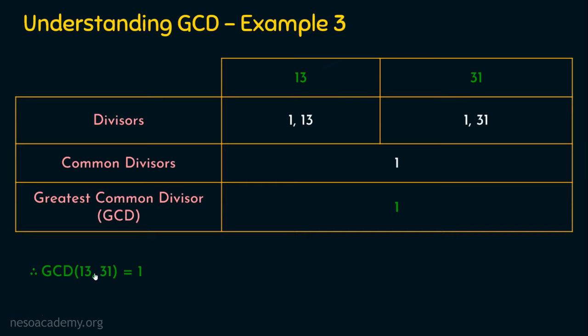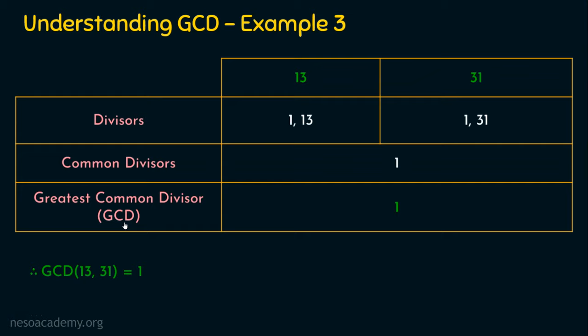But if the numbers are big, it's very difficult to find all the factors, then find the common divisors, and then find the greatest common divisor. So Euclidean algorithm does the job in an easy manner for us. Let's see how to find the GCD of two numbers using Euclidean algorithm.